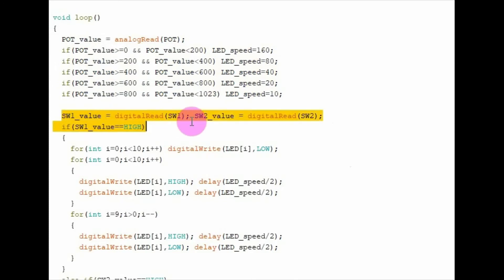Next, we monitor the two switches to see which one is pressed. If switch one is pressed, then the first thing we do is we switch off all the LEDs of the bar graph. Then using this for loop, we sketch this pattern. And then we use another for loop to sketch another pattern.